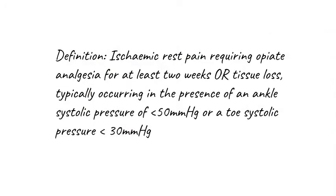We define chronic limb-threatening ischemia as ischemic rest pain requiring opiate analgesia for at least two weeks, or the presence of tissue loss. The rest pain or tissue loss typically occur in the presence of an ankle systolic pressure of less than 50 mmHg or a toe systolic pressure of less than 30 mmHg. It is very important to understand that to have CLTI the patient must have either rest pain or tissue loss.